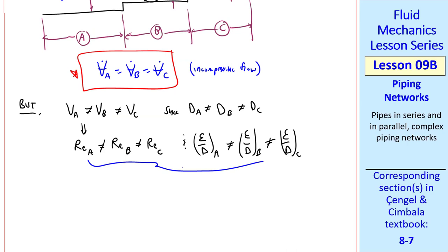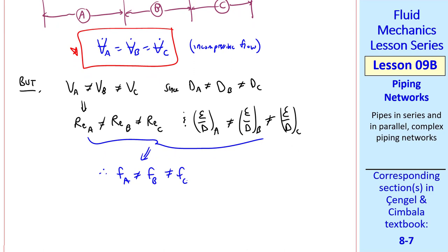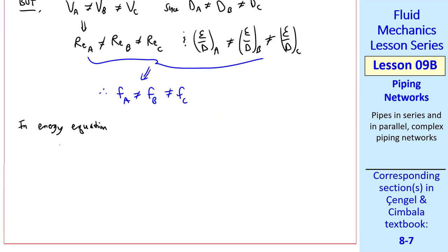Since both Reynolds number and relative roughness are not the same in the sections, Darcy friction factor is different in the three sections as well. So in our energy equation in head form, or workhorse equation, everything's the same as previously, but the HL total term, the total irreversible head loss, is more complicated.